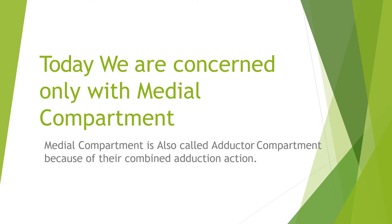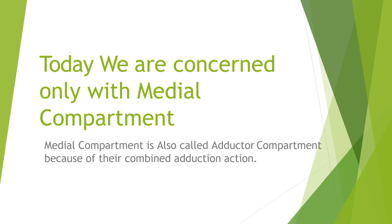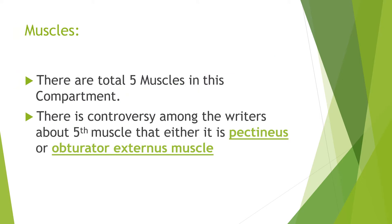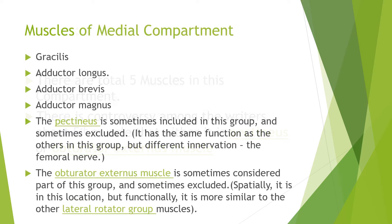The medial compartment is also called the adductor compartment because of the combined adduction action of its muscles — adduction of the thigh. There are a total of five muscles in this compartment, though there is controversy among writers about the fifth muscle, whether it is the pectineus or the obturator externus. The muscles are: gracilis, adductor longus, adductor brevis, and adductor magnus. The pectineus is sometimes included but has different innervation — the femoral nerve. The obturator externus is sometimes excluded due to its location, though functionally it is more similar to the lateral rotator group.